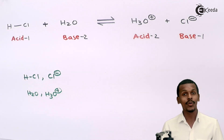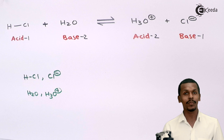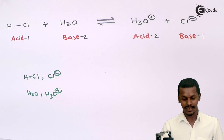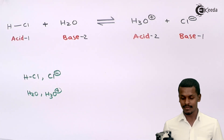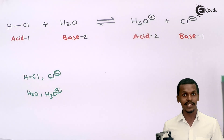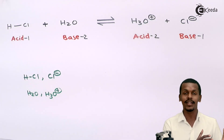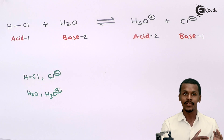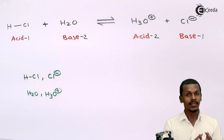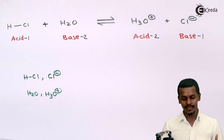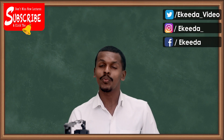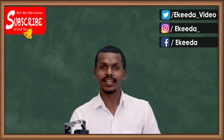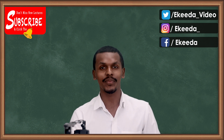That is the Lowry-Bronsted theory. One advantage over Arrhenius theory is that it explains how H₃O⁺ can act like an acid, which Arrhenius theory did not explain. Thank you friends for watching this video. I hope you liked and understood this video. Please share it with your friends and don't forget to subscribe to the channel.